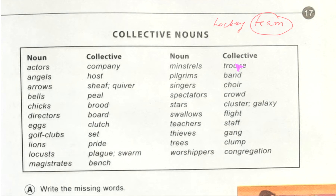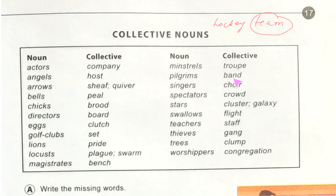You don't need to worry about that now — you have to memorize these collective nouns. For actors: company. Angels: host. Arrows: quiver. Bells: peal. Chicks: brood. Directors: board. Eggs: clutch. Golf clubs: set. Lions: pride. Locusts: plague or swarm. Magistrates: bench. Minstrels: troop. Pilgrims: band. Singers: choir. Spectators: crowd. Stars: cluster or galaxy. Swallows: flight. Teachers: staff. Thieves: gang. Trees: clump. Worshippers: congregation.